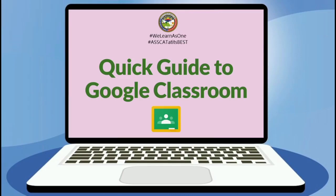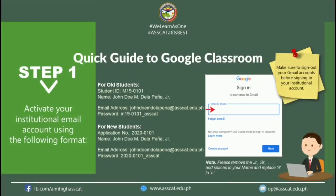Before you use Google Classroom for joining your classes, you are encouraged to use the institutional account provided by the school. Here's how to activate your institutional account. If you are already officially enrolled in ASCAT, the format for your email address is your first name, middle initial, and last name, followed by the ASCAT domain. The format for your password is your ID number plus underscore ASCAT.